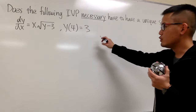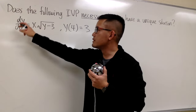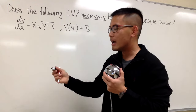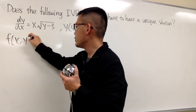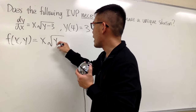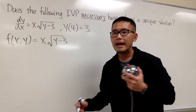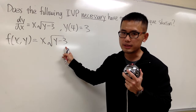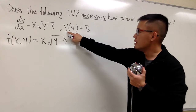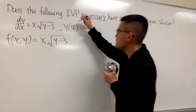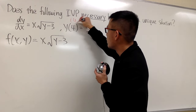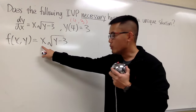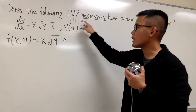When I look at this initial value problem, the dy/dx is already by itself. That means this right here is my function f of x, y. So let me write it down: this is x squared times the square root of y minus 3. I have two things to check. First, if this function is continuous around this point. You see it's written as y of 4 equals 3, which means we have the initial point at (4, 3). This is x-naught and this is y-naught.